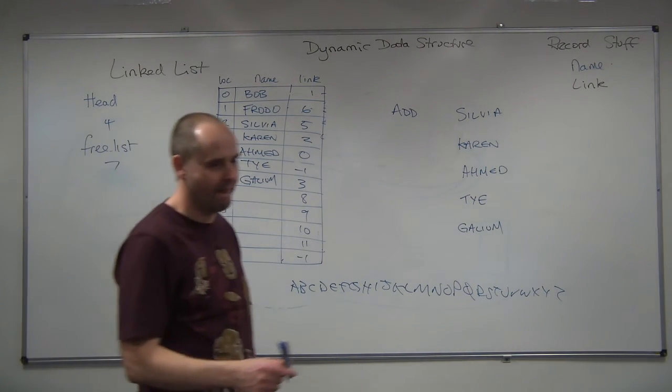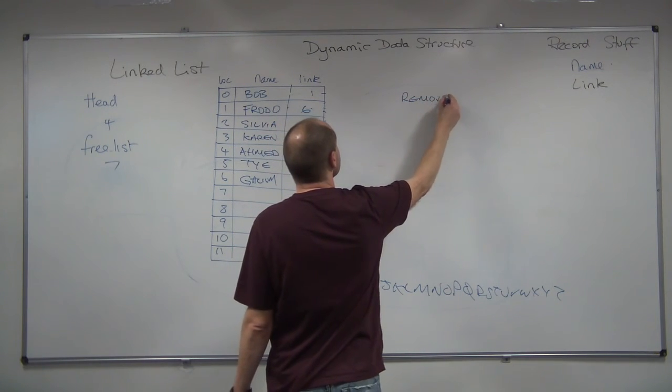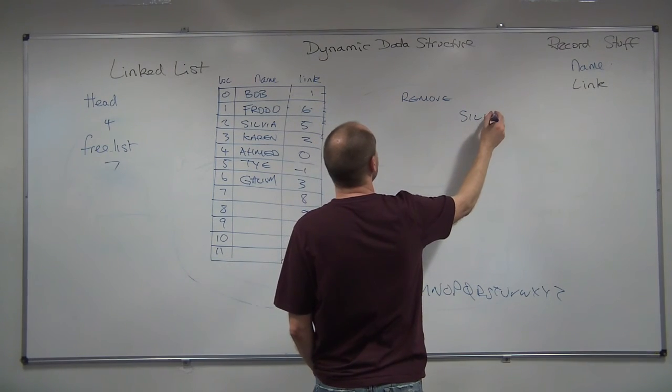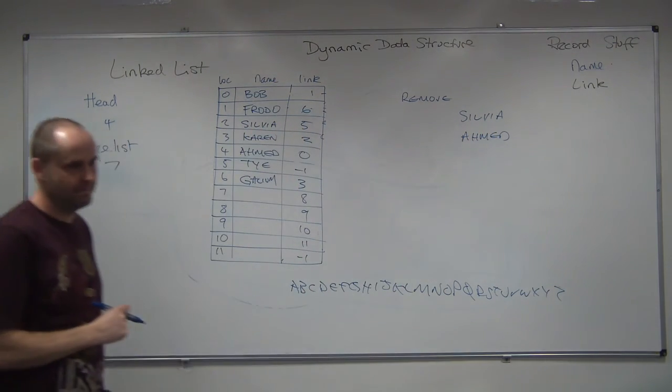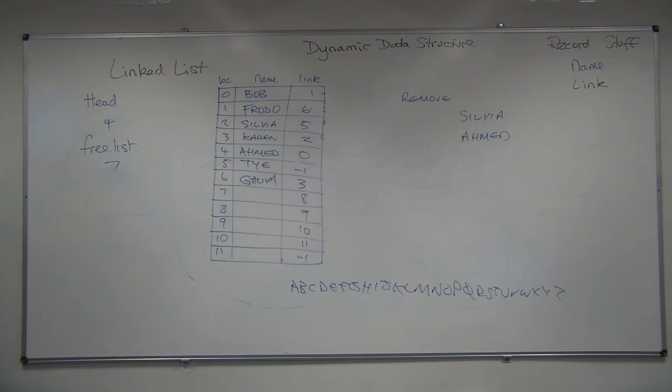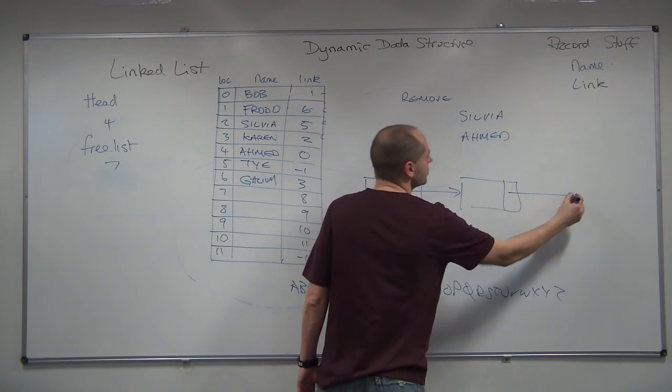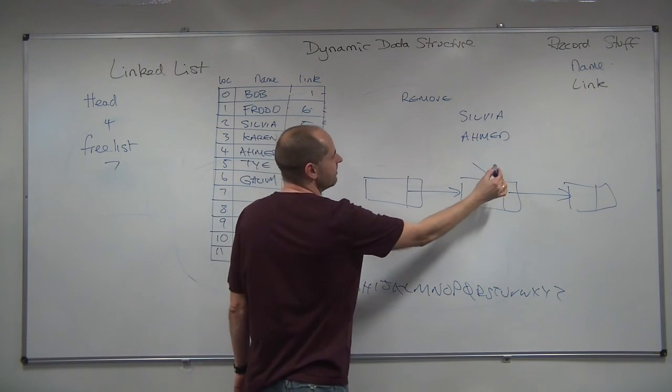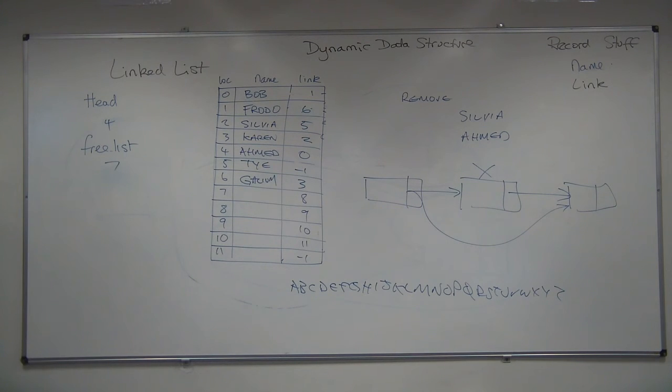What I want you to do is to look at how I want you to remove in this order. Get rid of Sylvia and get rid of Ahmed. But do it in that order. I want you to remove them. So you've first off got to search for where they are in the list. And then you've got to make adjustment to the pointer to skip them. So effectively, when we have the dynamic one, we have that structure. And what we want to do is if we want to get rid of that one, we just point past them. So you change just the link pointer. But you have to add them to the free list as well.